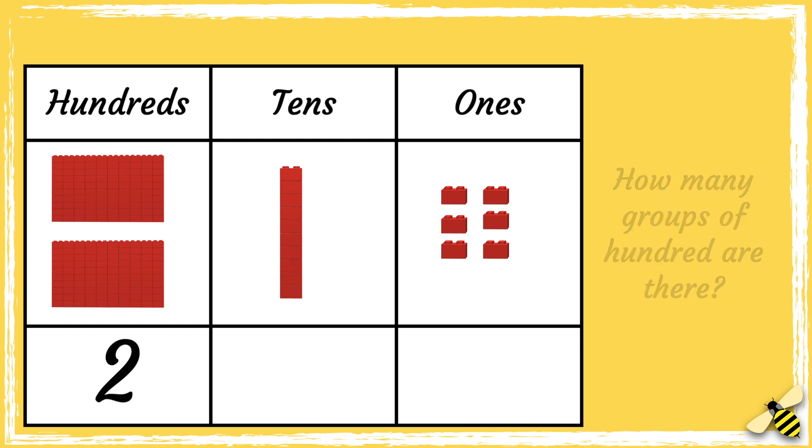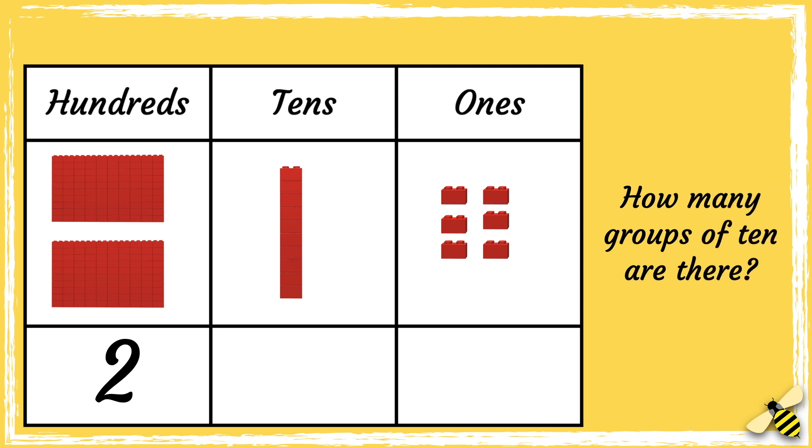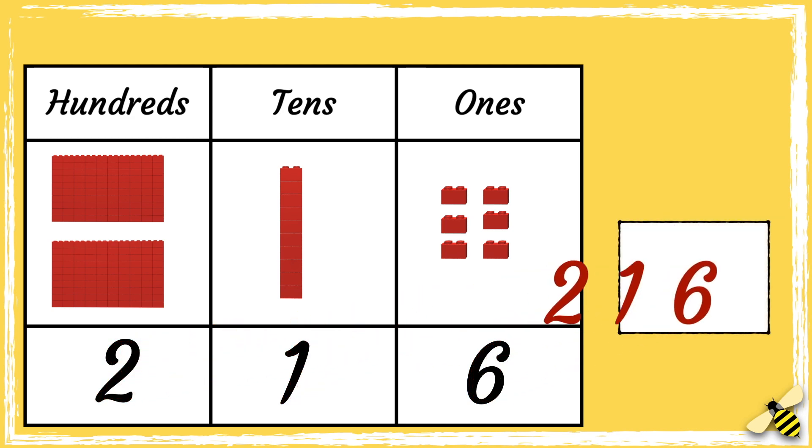There are two hundreds. How many tens are there? There are six ones. So the number shown on the grid is two hundred and sixteen.